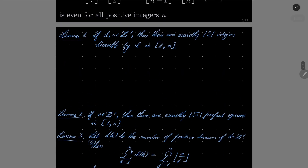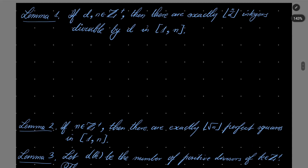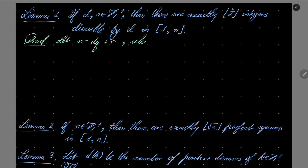Let's start with lemma number one. We wish to prove that if d and n are positive integers, then there are exactly floor of n over d integers divisible by d in the interval from 1 to n. It's a well-known fact, but here's the proof.